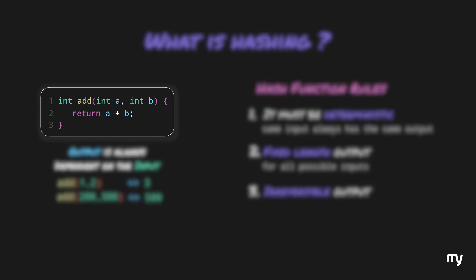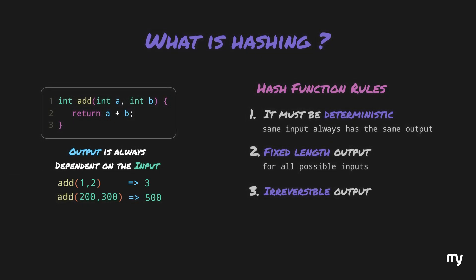So, in our add method, no matter how many times we pass 1 and 2 into the function, the output will always be 3. It means that the same input always has the same output. So, we have satisfied at least one rule.